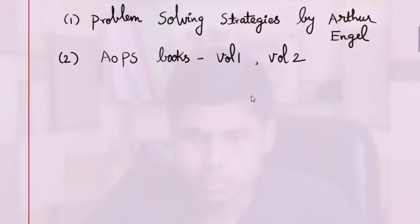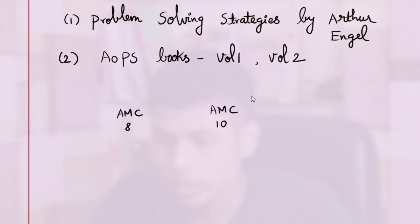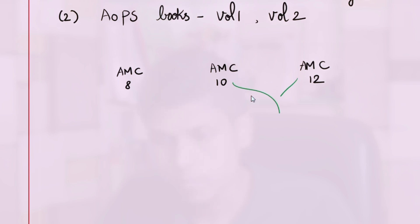Let us look at the hierarchy of AMC contests and where it leads. Students usually start with AMC 8, then AMC 10 and/or AMC 12. AMC 8 is like a practice contest, but AMC 10 and 12 are serious contests that lead toward the International Math Olympiad. Students who perform well in AMC 10 and 12 are invited for AIME — the American Invitational Mathematical Examination.